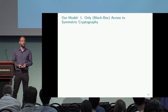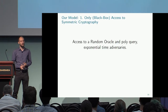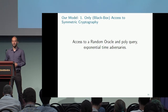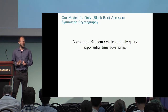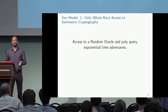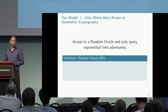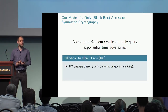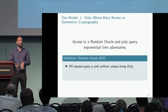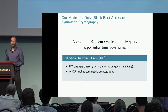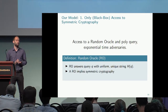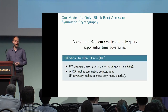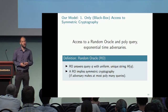To capture blackbox access to symmetric cryptography, the straightforward approach is to give access to a random oracle with an unbounded adversary, restricting the number of queries that adversary can make. A random oracle is a functionality that every party can query on some input; it returns a uniform, unique, consistent string H(Q). The random oracle implies symmetric cryptography because it can be seen as an ideal version of a one-way function or hash function — but only if we restrict the adversary to a polynomial number of queries.